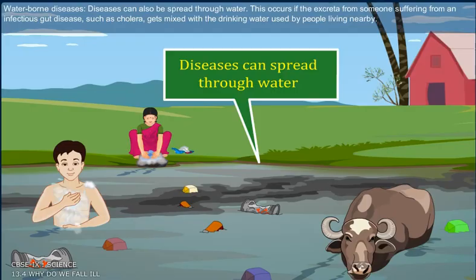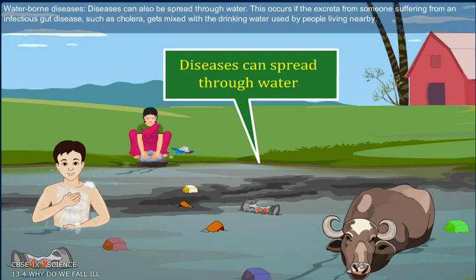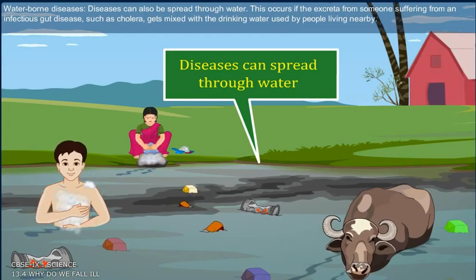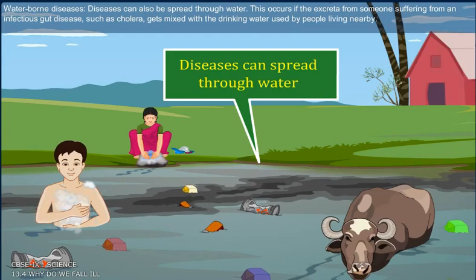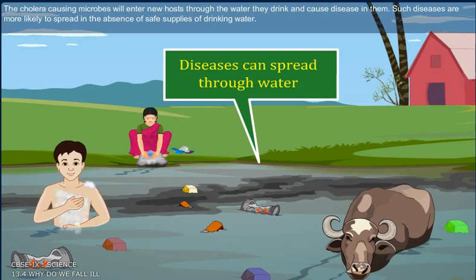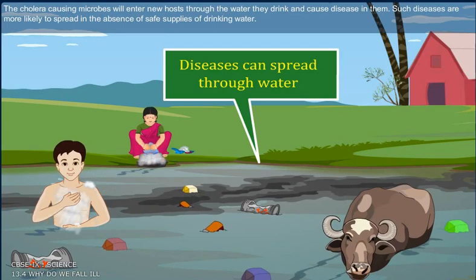Waterborne diseases: Diseases can also be spread through water. This occurs if the excreta from someone suffering from an infectious gut disease, such as cholera, get mixed with the drinking water used by people living nearby. The cholera-causing microbes will enter new hosts through the water they drink and cause disease in them. Such diseases are much more likely to spread in the absence of safe supplies of drinking water.